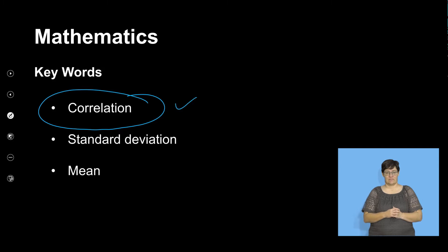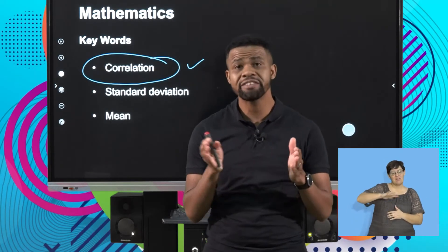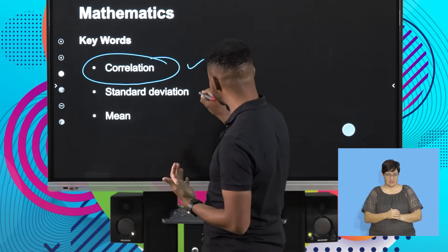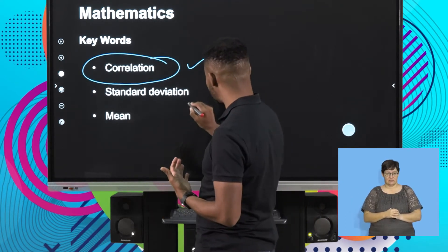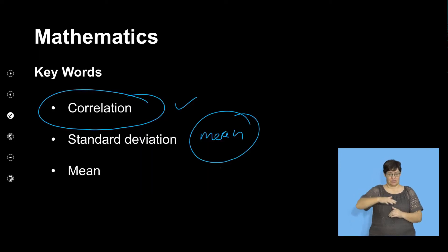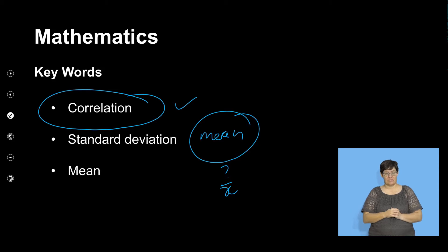What is standard deviation? Remember the standard deviation is the average deviation from the mean. The mean, when I talk about the mean, we talk about the average, denoted by x-bar if you remember. The standard deviation is how far you are from the mean — the deviation from the average.